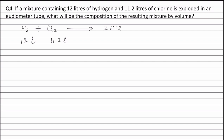Moles of hydrogen is volume of hydrogen divided by molar volume, that is 12 divided by 22.4. Moles of chlorine is equal to volume of chlorine divided by molar volume, that is 11.2 liters divided by 22.4 liters. As seen from the moles of chlorine and moles of hydrogen, the moles of chlorine is less than moles of hydrogen. Therefore, chlorine is the limiting reagent and the amount of HCl formed depends upon the moles of chlorine present.